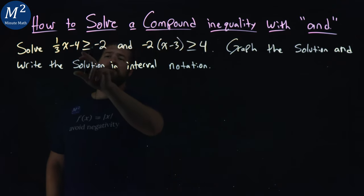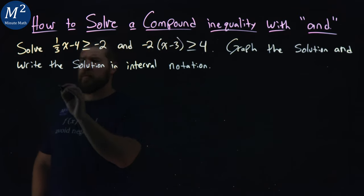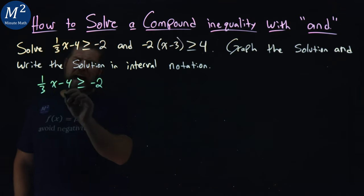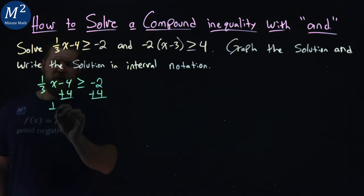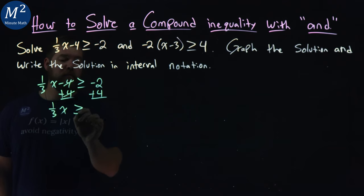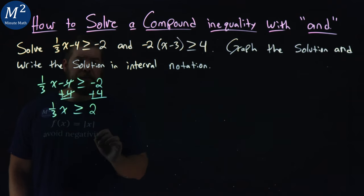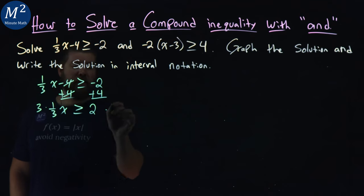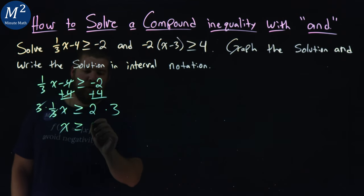Our first step is to solve each inequality individually. Starting with the first one: ⅓x - 4 ≥ -2. I'm going to add 4 to both sides. The fours cancel, giving us ⅓x ≥ 2. Then I multiply both sides by 3. One-third and three cancel on the left, giving me x ≥ 6.